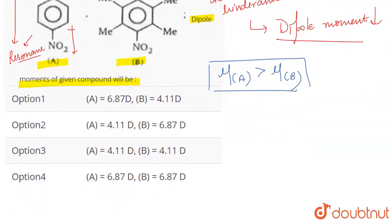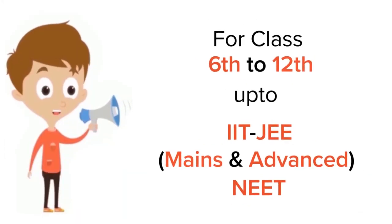So now if you look at the options, in option number one, A has a higher dipole moment in comparison to B. So this is going to be the correct answer for the question. Option two cannot be the case because here A has a lower value of dipole moment. Option three cannot be the case - they do not have same values. Option four is also incorrect by the same reason. So the correct answer is option one.